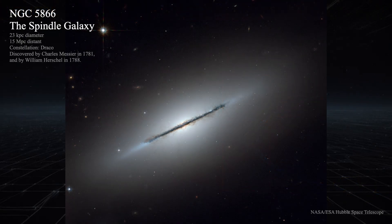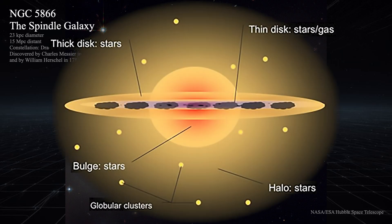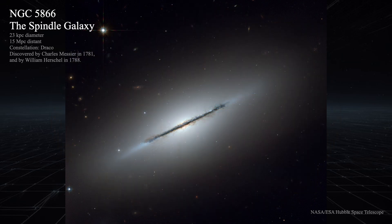Lenticular galaxies have some really unique characteristics. Their distinctiveness lies in the visible disk and prominent bulge components. They tend to have a higher bulge-to-disk ratio compared to typical spiral galaxies, and yet they lack the spiral arm structures found in the late-type galaxies. This bulge-to-disk ratio is a measure of how prominent the bulge is compared to the disk in terms of luminosity and apparent size. Some lenticulars may even exhibit a central bar, similar to barred spiral galaxies.